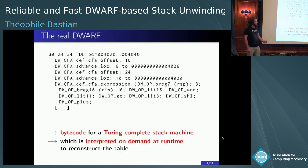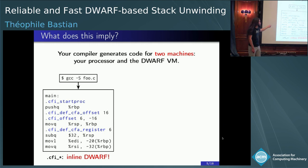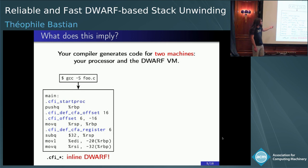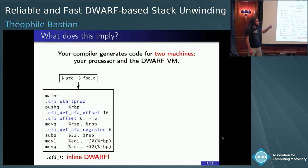So to recap: your compiler actually generates code for two machines — your processor and the DWARF virtual machine. This means that if you ever used GCC -S to generate the assembly of a source file, you get the actual assembly in black, and you might have noticed these .cfi directives. Well, this is inline DWARF — your compiler generates inline DWARF that turns into that bytecode we've seen.